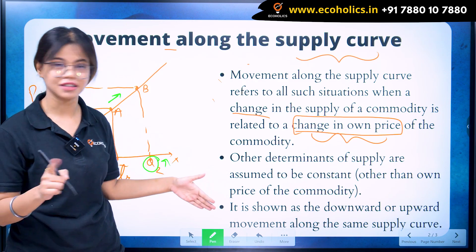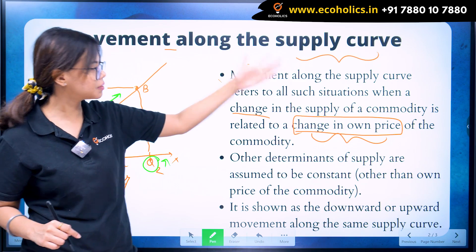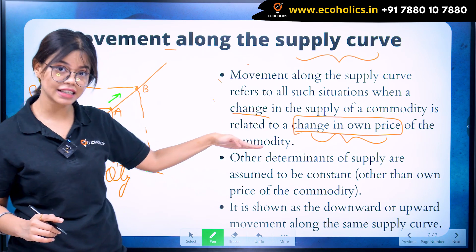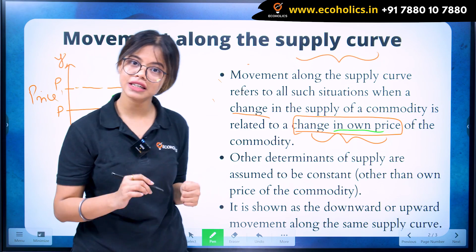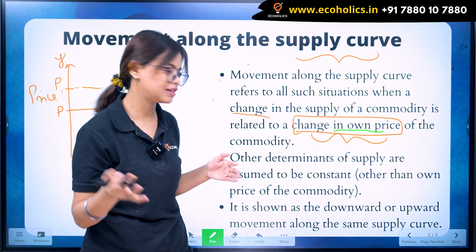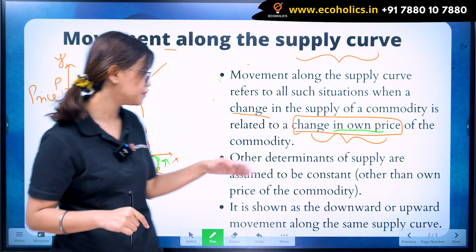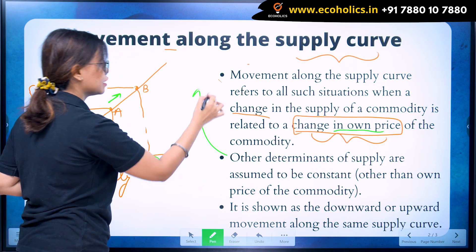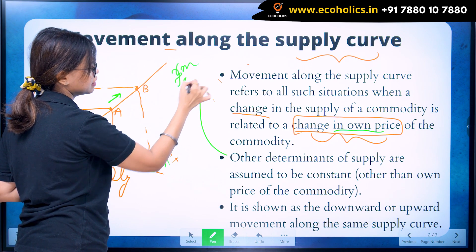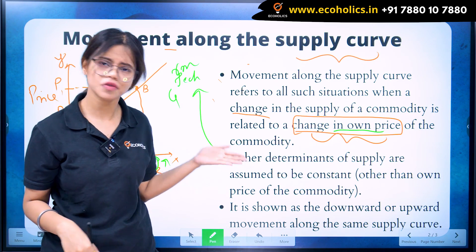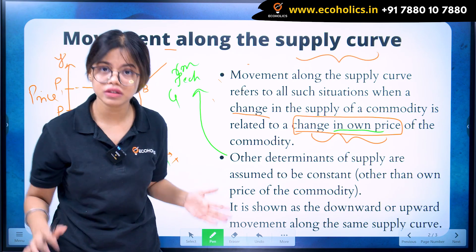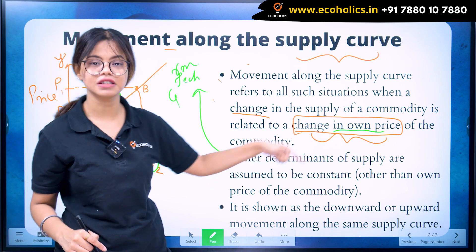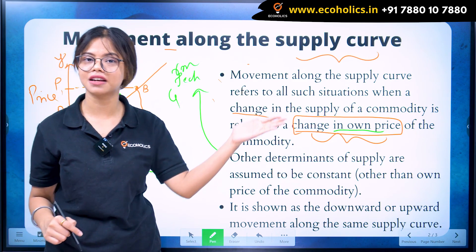So, this is what the movement along the supply curve means. Movement along the supply curve refers to all such situations when change in the supply of a commodity is related to change in the own price of the commodity. Price rises — quantity supplied rises. Price falls — quantity supplied falls. The other determinants of supply, such as raw material, technology, and government policy, remain constant. It is shown as the upward or downward movement along the supply curve.